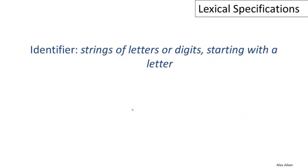Now let's look at yet another example, even more sophisticated than the previous two. Let's think about how to define identifiers, which are strings of letters or digits that begin with a letter. We already know how to do digits, so let's focus on the letters. How will we write out a regular expression for the letters? We'll name it 'letter', so we say the letters are a single letter, and now we have to write a regular expression for all the individual letters.